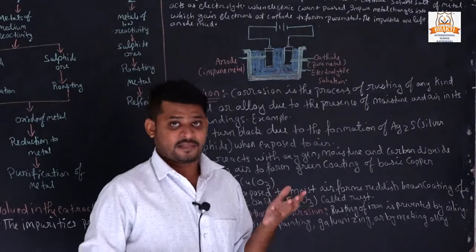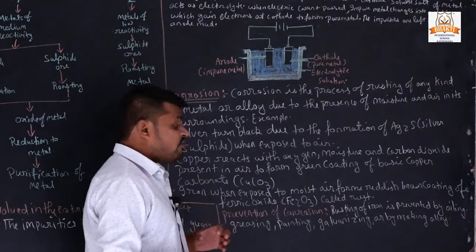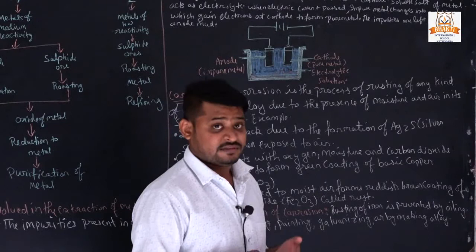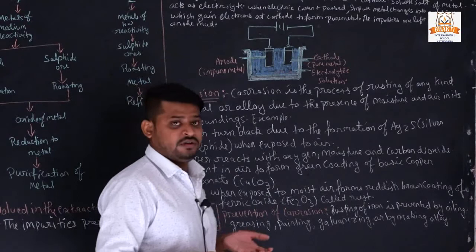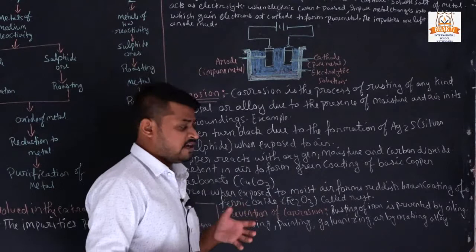We use these methods to prevent corrosion — to save metals from rusting. Corrosion can be prevented by applying oiling, greasing, painting, or galvanization on the surface of the metal.